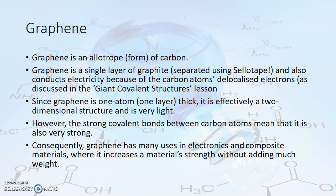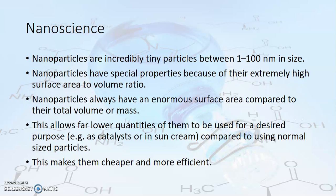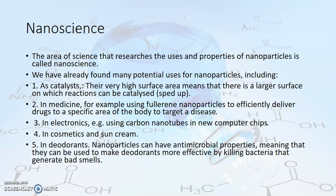Graphene has many potential uses in electronics and in materials because it conducts electricity and is a very strong substance. It can be used to enhance the strength of materials without making them heavier because it is such a light but strong substance. This brings us to what we call nanoscience - dealing with particles that are very, very small. It's a huge area of science and we're only covering it very briefly. Because nanoparticles are so small, that gives them a huge surface area compared to their volume or mass - the smaller a particle, the greater the surface area. That means we can use far fewer of them for certain things, for example as catalysts, rather than using normal-size particles, which makes them cheaper and more efficient.